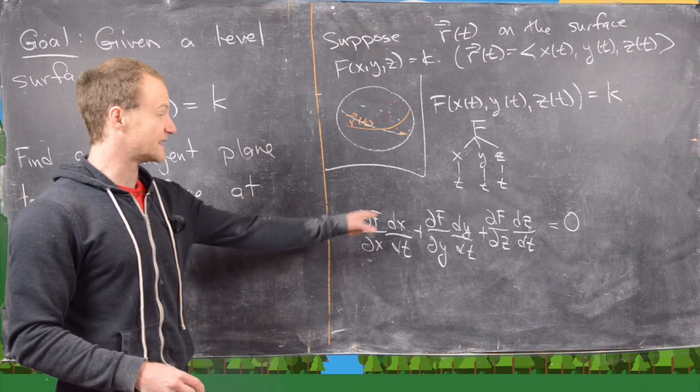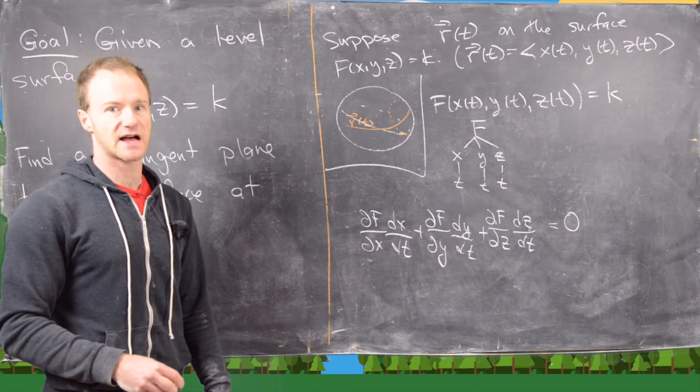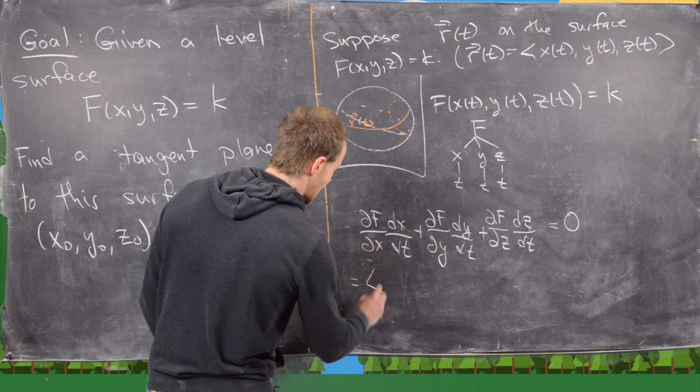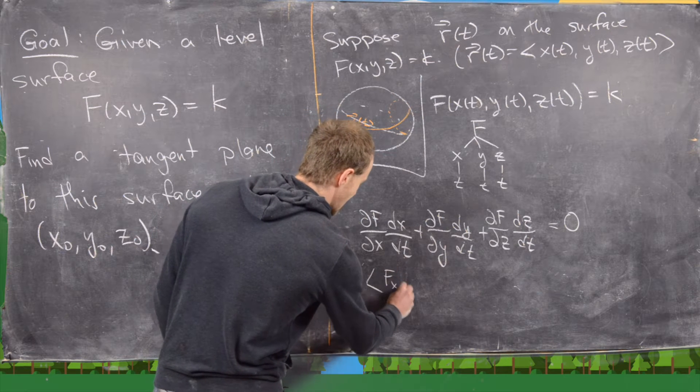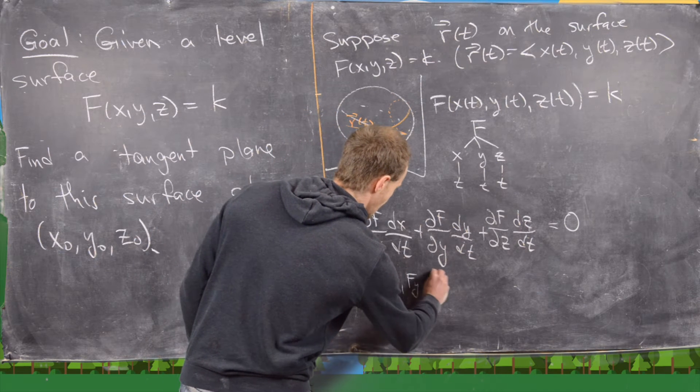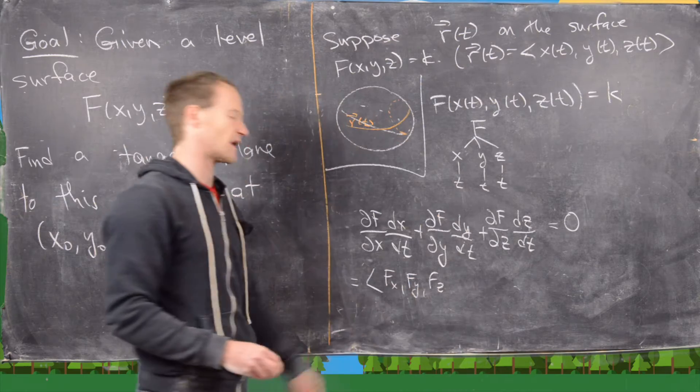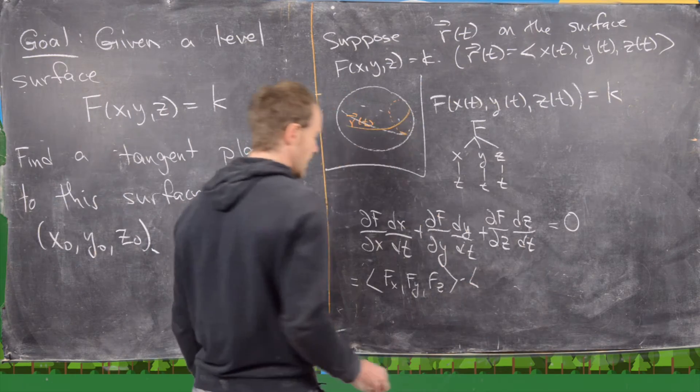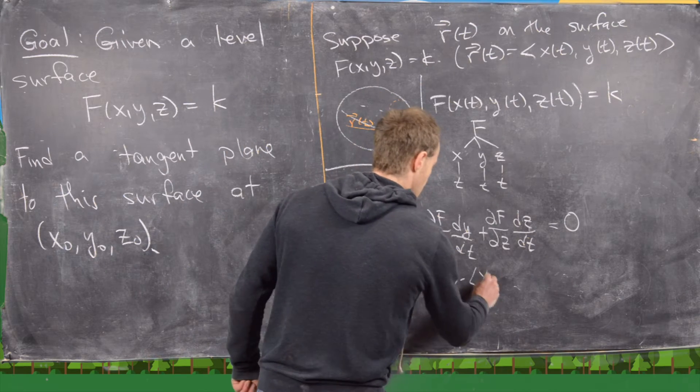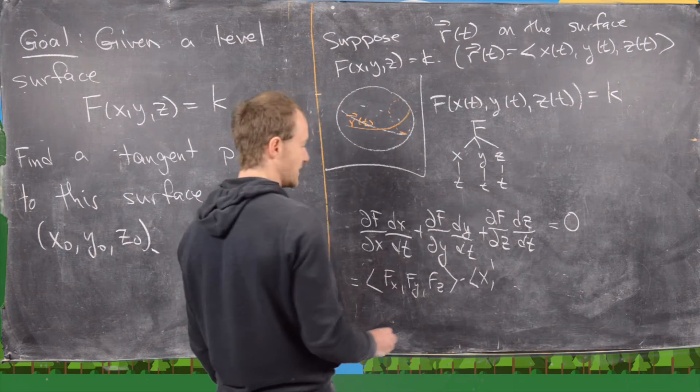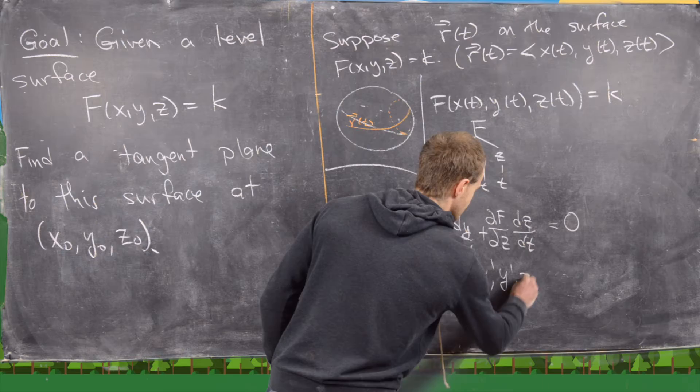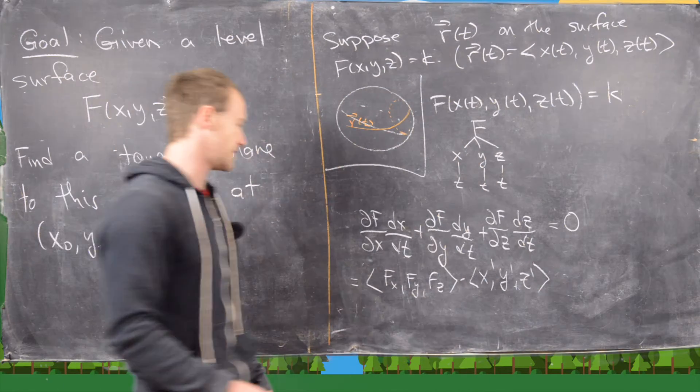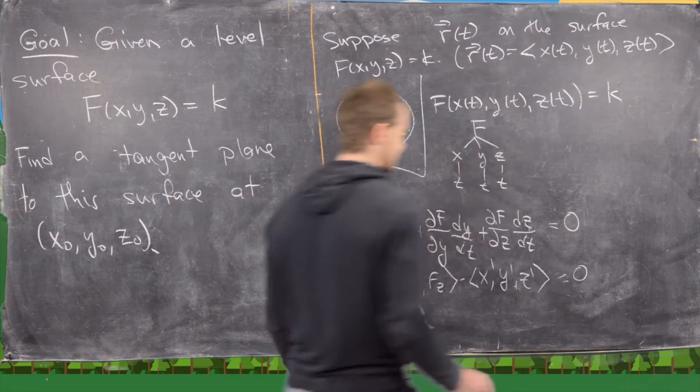Now notice we can decompose this left-hand side into a dot product, so that left-hand side is exactly equal to f sub x, f sub y, f sub z, so that's what I'm using new notation here, and then dotted with the vector made by x prime, y prime, z prime, where I'm using primes to mean derivative with respect to t, and then we have this is equal to zero.